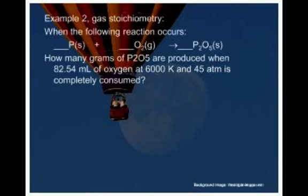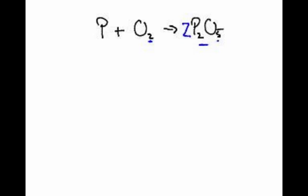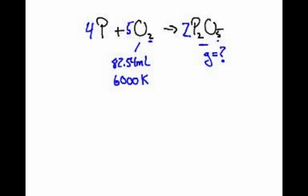We have one more example with this gas stoichiometry. I even gave you the equation, how nice was I? But it's not balanced. The equation was P plus O2 makes P2O5, diphosphorus pentoxide. So when I balance this you always start with the most complex one. I assume you have an oxygen issue. If I put a 2 here that gives me 10 oxygens, that gives me a 5 here and a 4 here. There it is. Now what do I know? This question says how many grams of P2O5 are produced when 82.54 milliliters of oxygen at 6000 Kelvin - is that hot? That's pretty toasty - and 45 atmospheres - oh my word, that's very high pressure too - is completely consumed.